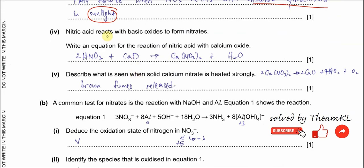Part 4: Nitric acid reacts with basic oxide to form nitrates. Write an equation for the reaction of nitric acid with calcium oxide. This is a neutralization reaction — it forms salt and water. The salt produced is calcium nitrate. Put the nitric acid with calcium oxide (CaO) and it forms calcium nitrate and water. Then balance it by putting a coefficient of two.